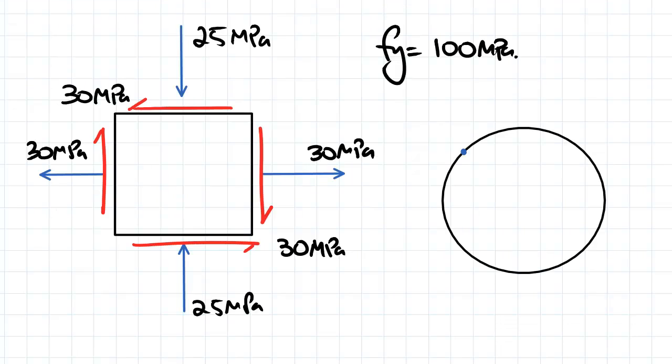So if we have a look at our question here, we've been given our normal stresses and shear stresses. And we need to check if it's yielded, and the yield stress is equal to 100 MPa, according to von Mises and Tresca's yield criterion. So what we want to do first is we can plot our points on the Mohr circle, and then we can work out what the principal stresses are.